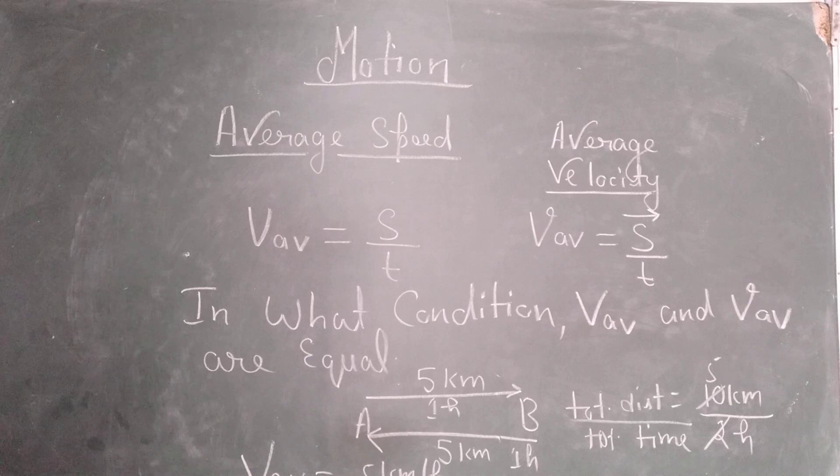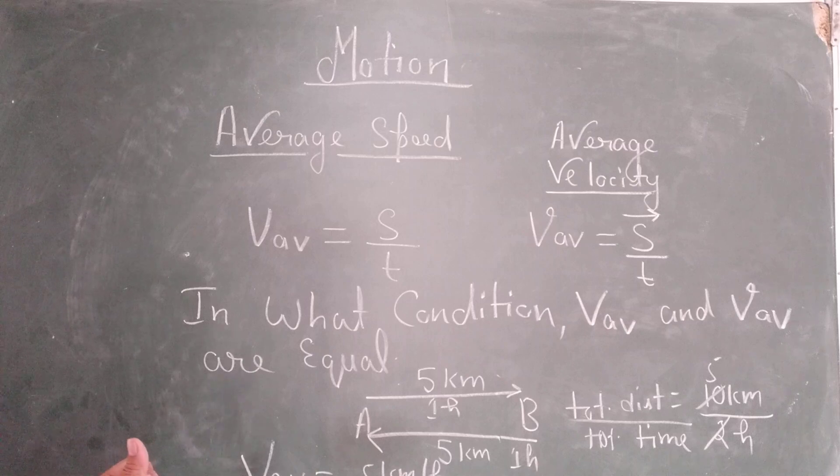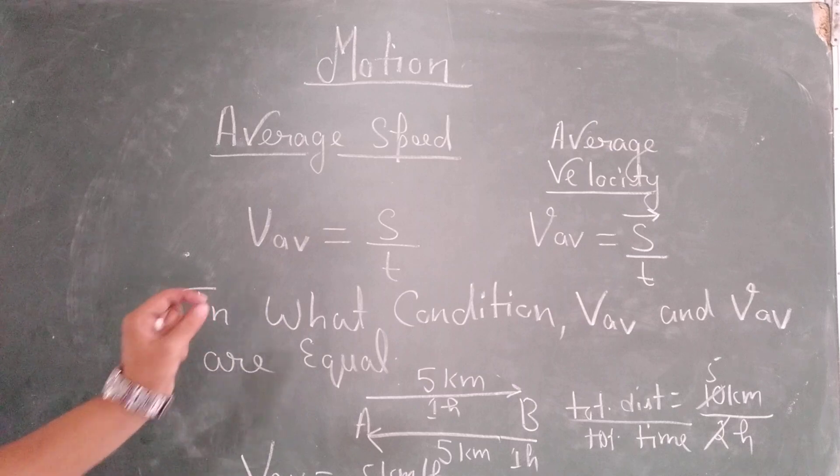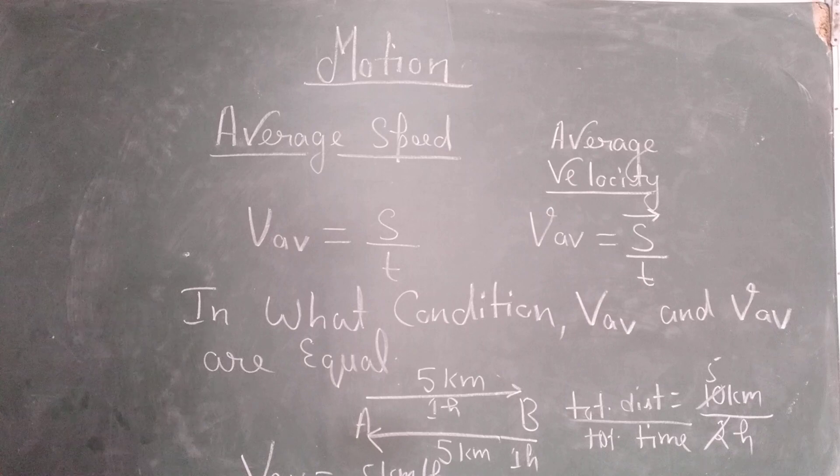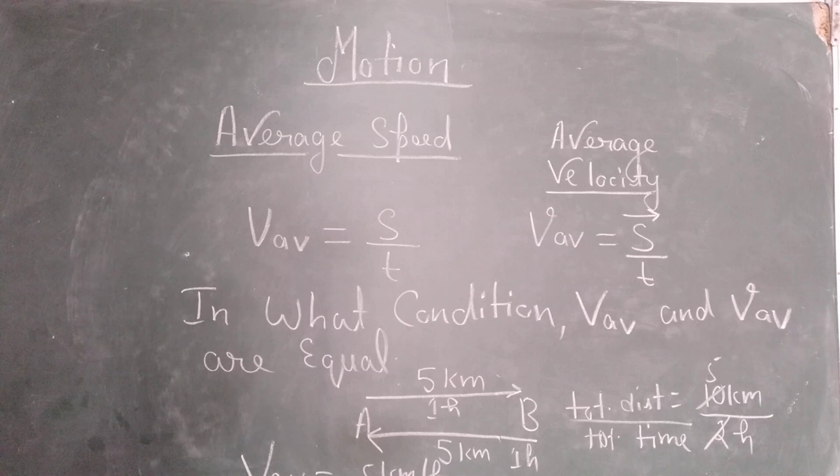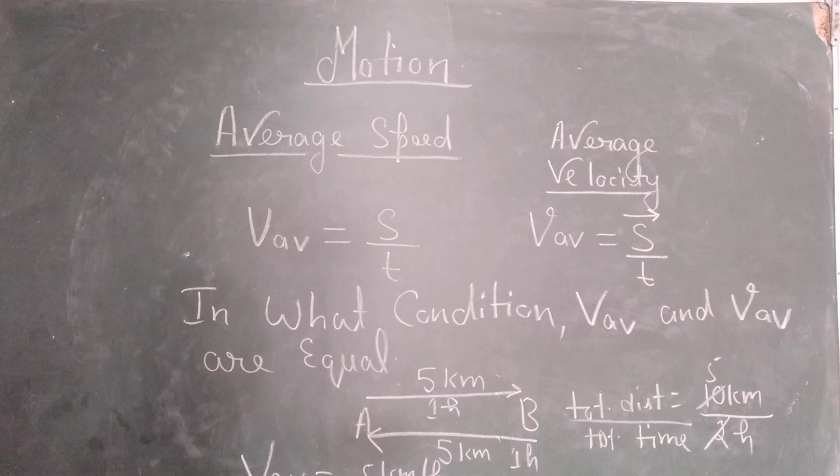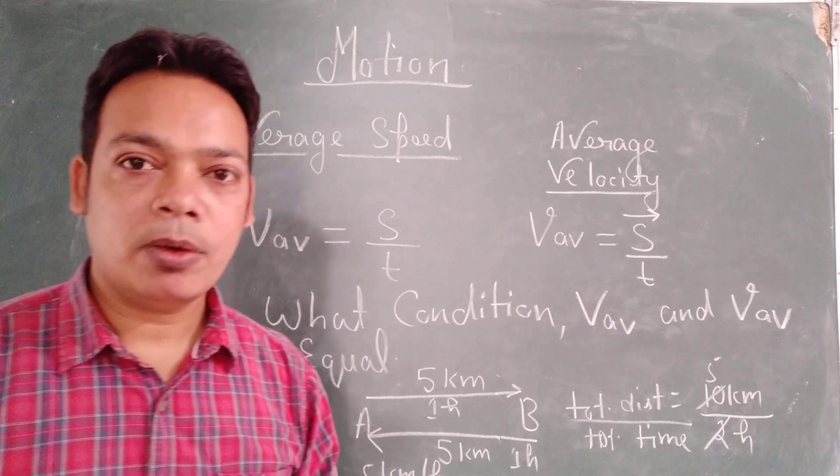If you talk about the average speed for this situation, average speed will be equal to 5 km per hour while average velocity will be equal to 0 km per hour. Now the question was in what condition average speed and average velocity are equal? Your answer will be when the initial and final position are not the same. In this case average speed and average velocity can be equal.